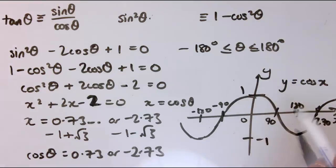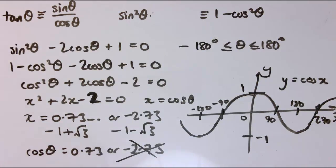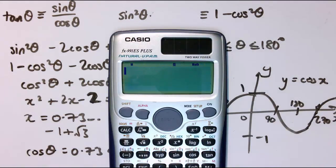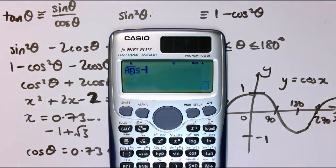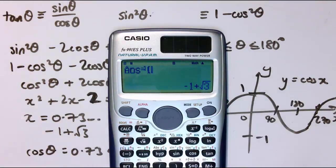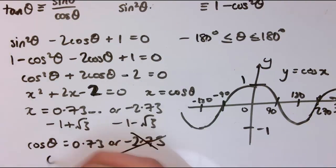Now notice that cos x is always between minus 1 and plus 1, so actually I can't have cos θ is minus 2.73. That one doesn't give us any answers at all. I can only have cos θ equals 0.73. And actually to give me an exact answer, let me type back in the exact formula root 3 minus 1. And I'll do cos inverse of that, and that will give me 42.9 degrees. So this tells me θ equals 42.9 degrees.